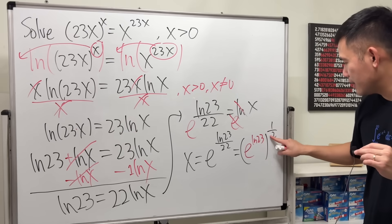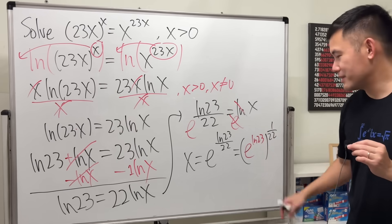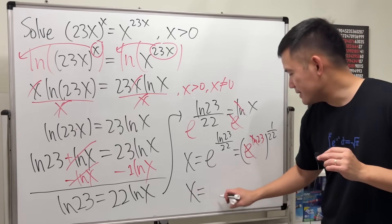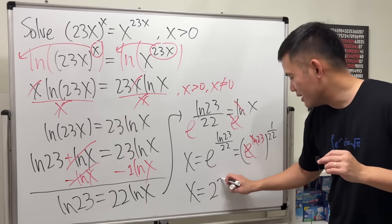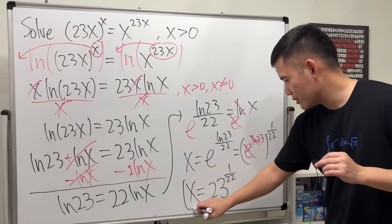We can look at this power first and then that power. Once we have that, e and ln cancel, so in fact x can be nicely written as 23^(1/22). I think it's really cool.